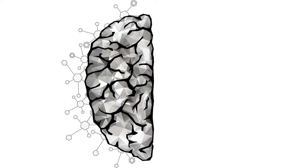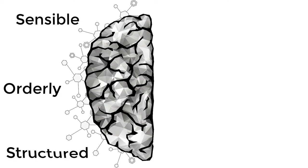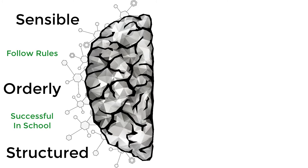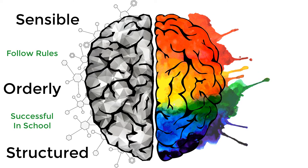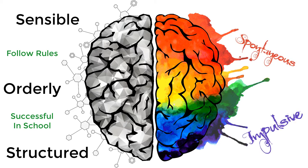Rules are left-hemisphere dominant — they are sensible, orderly, and structured. Left-hemisphere dominant students are often the ones who follow rules and are successful in school. But what about the right-hemisphere dominant type of student who acts spontaneously and impulsively, and whose brain processes randomly? These are the students who don't follow the rules. These students need structure, and relying on rules does not provide what they need for success.